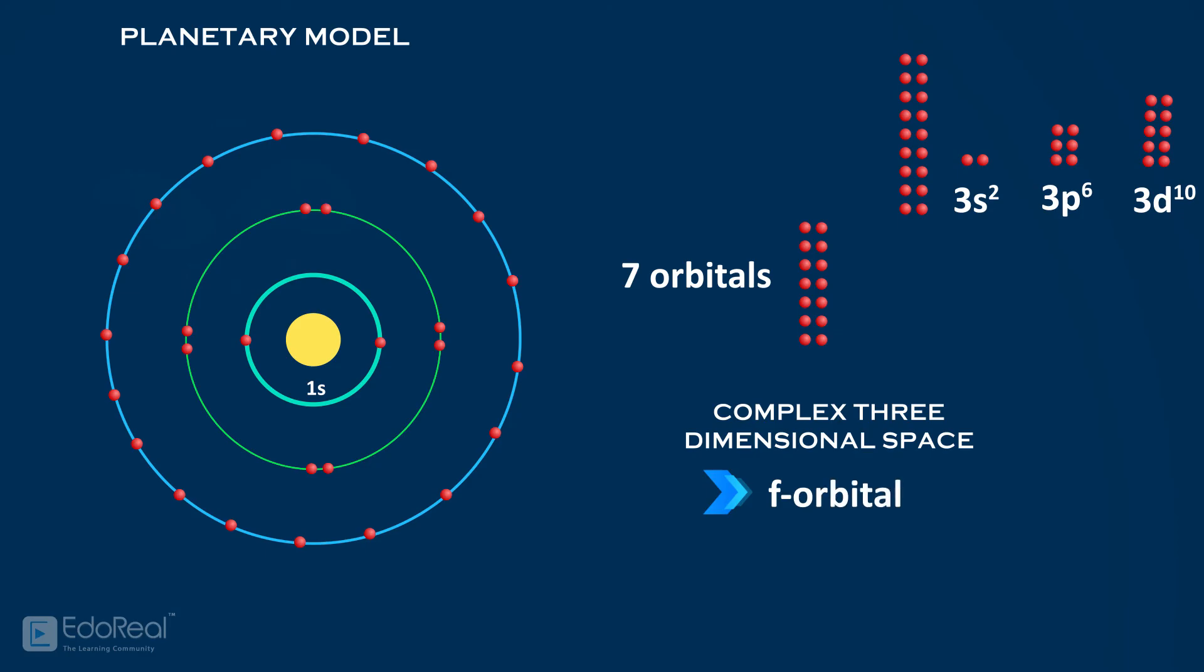These 32 electrons are represented in a single orbit called N or 4th orbit in planetary model.